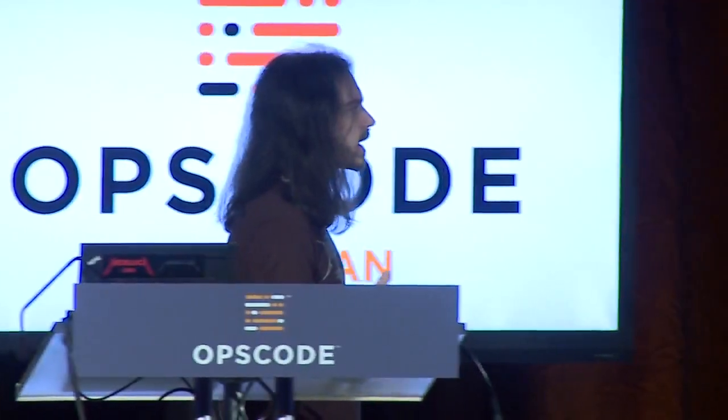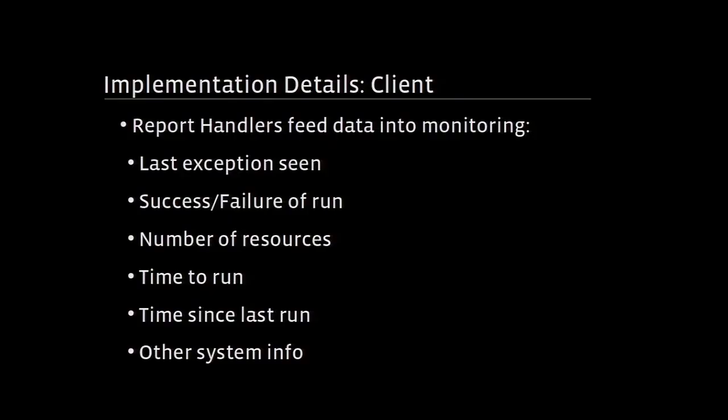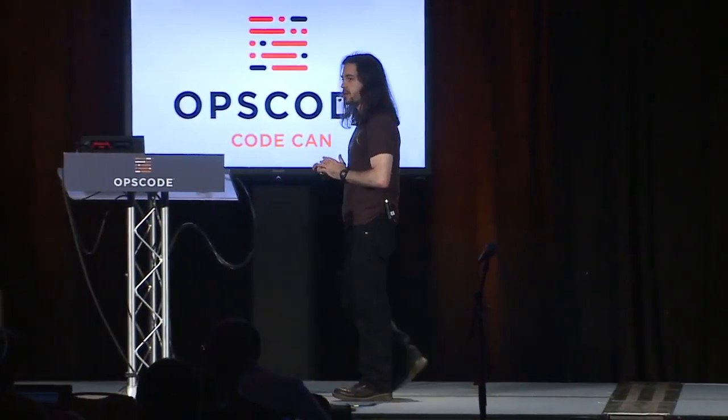Our run list is forced on every run, so node objects on the server are completely ephemeral — we can throw them away. It's sometimes useful to run a knife command to get status information, but we can throw them all away at a moment's notice. On the client, we have a report handler that takes last run, last exception, etc. and shoves it into our internal monitoring system. On the server side, we take all the stats and errors from all the daemons and push them into our internal monitoring system as well. We open-sourced this script; it works on both Open Source and Private Chef, dumps a JSON object, and you can get it on GitHub.